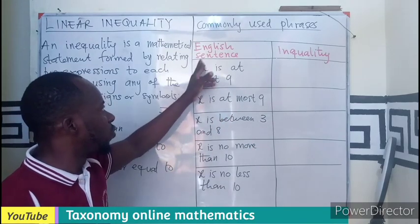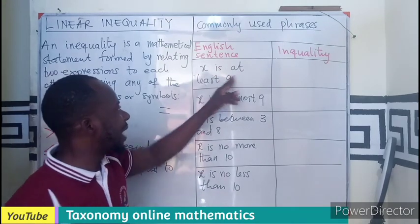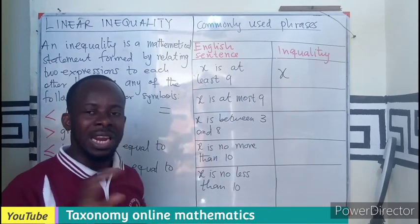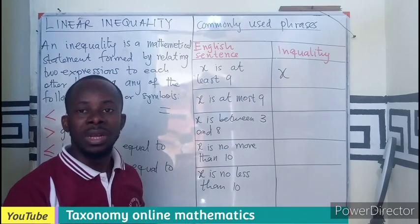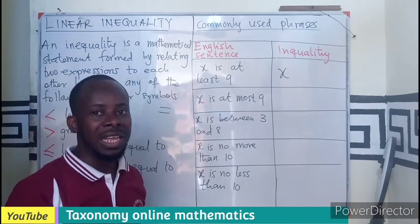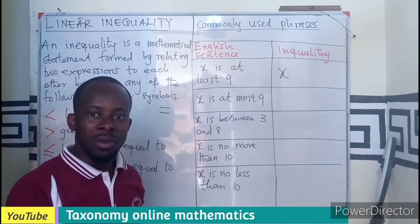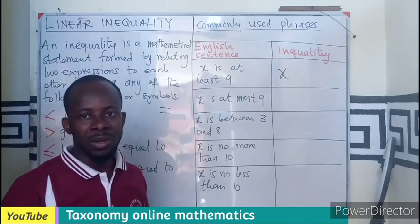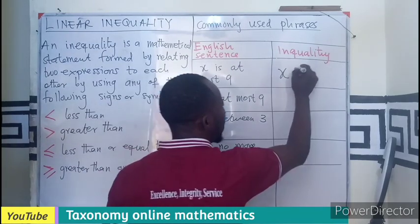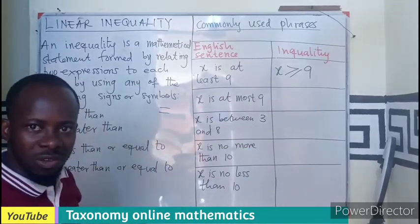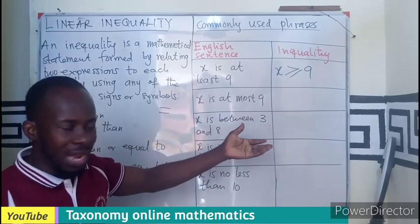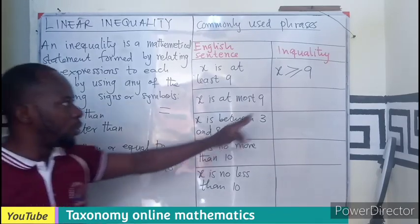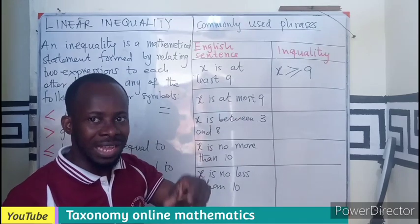For example, 'x is at least nine' — the x is not equal to nine, but the least value x can take is nine. So ten, fifteen, one hundred and so on are all valid values of x. This means x is greater than or equal to nine. We use the greater than or equal to sign when we hear the phrase 'at least' in a word equation.